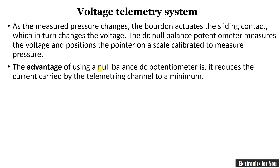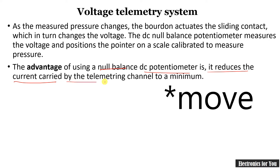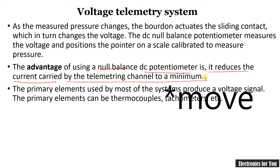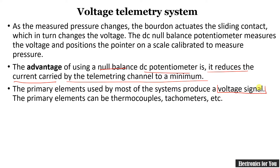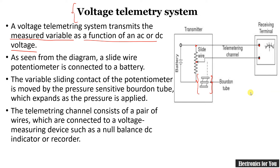The advantage of using a null or balance type DC potentiometer is that it reduces the current carried by the telemetry channel to the minimum. In this case, the primary element used is the voltage signal, and as shown in the diagram, this Bordon tube was moving and converting the given signal into voltage.